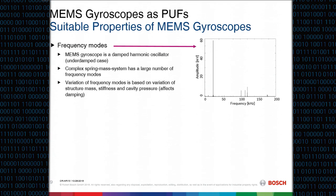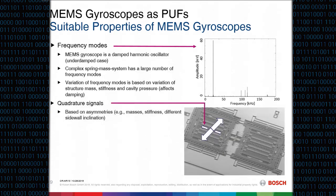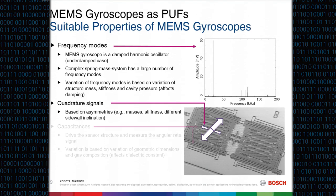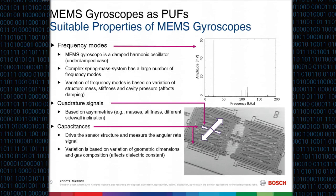Here are the parameters we used for key derivation. The first are the frequency modes — MEMS gyroscopes have a large number of such modes because they are complex spring-mass systems, and the position of those modes varies based on manufacturing variations, especially spring stiffness variations. The second parameters are quadrature signals, which occur when the direction of the oscillating mass deviates from its ideal direction, generating an error signal based on asymmetries in the structure. The third parameters are the capacitances between all electrode pairs used to measure and drive the sensor structure.